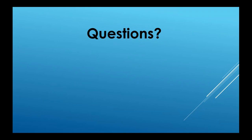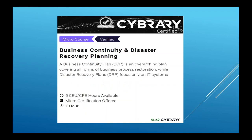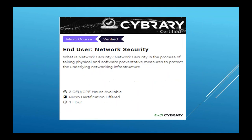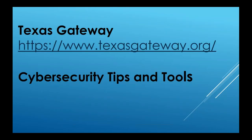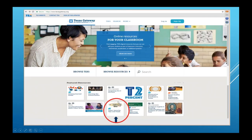The URL is HTTPS://www.texasgateway.org. There are featured resources, and you will find cybersecurity and cybersecurity tips and tools under featured resources. If you click on that, it will bring you to all the resources that we've published out there for the educational community.